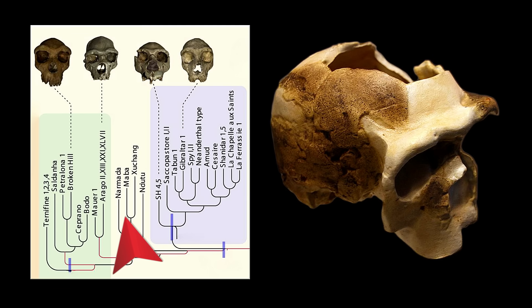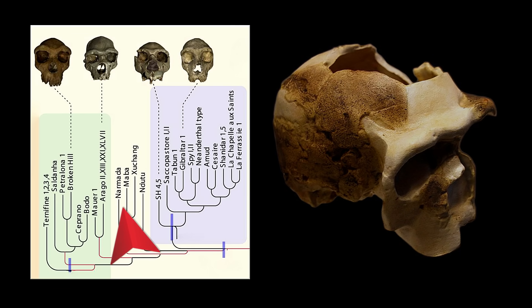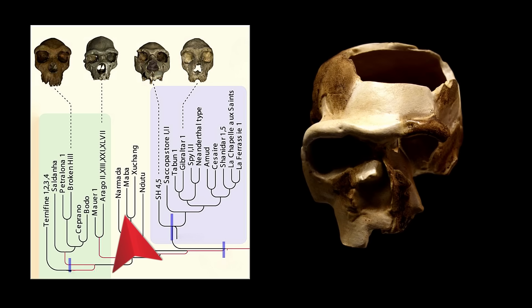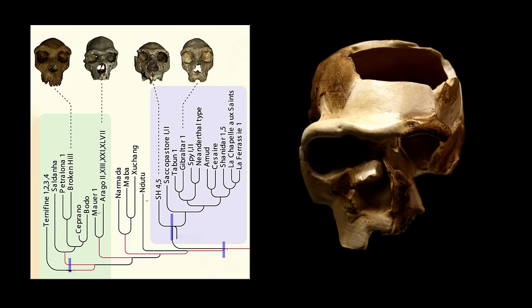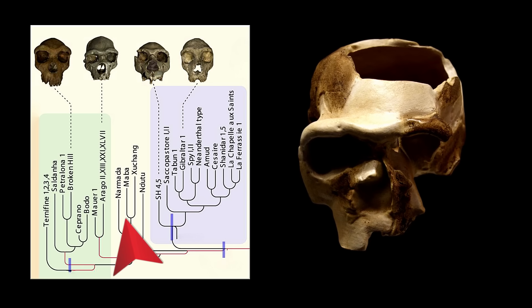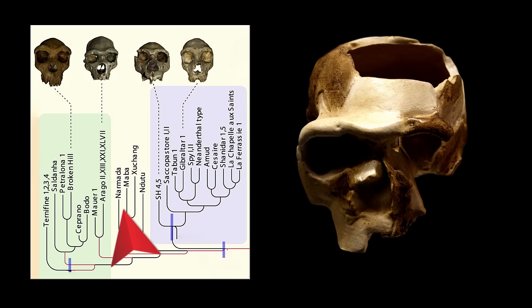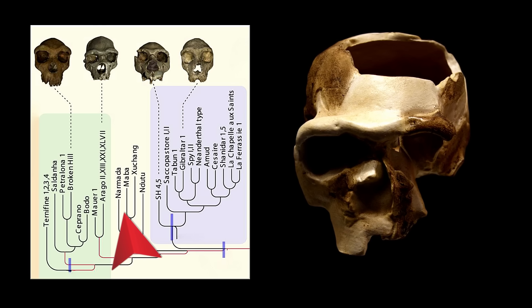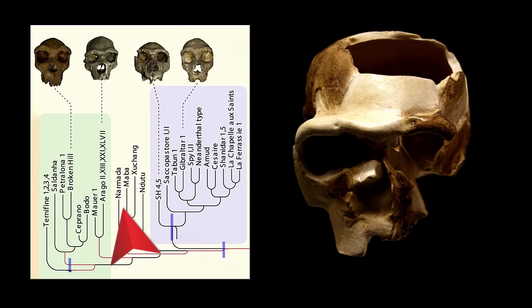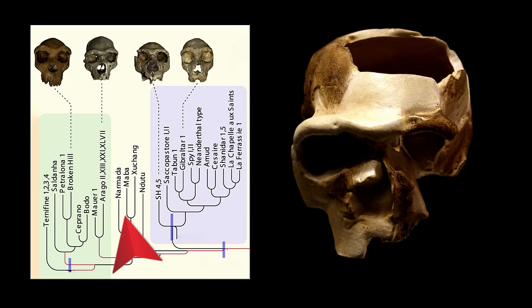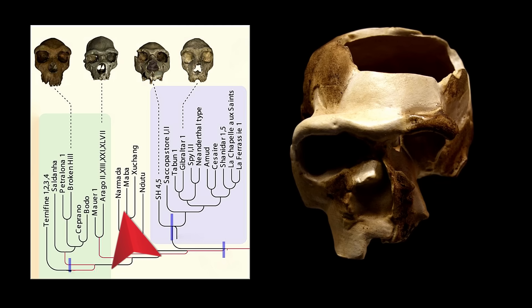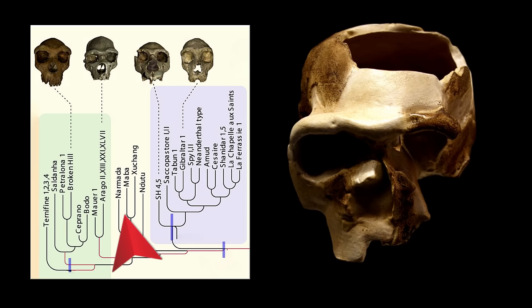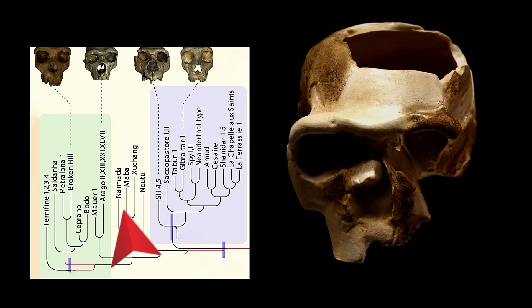We're talking about rewriting the origins of our species as we know it, rethinking how our forefathers migrated, interacted, and evolved. The Ndutu skull is the partial cranium of a hominin that has been assigned variously to late Homo erectus, Homo rhodesiensis, and archaic Homo sapiens, from the middle Pleistocene, found at Lake Ndutu in northern Tanzania.